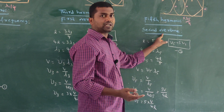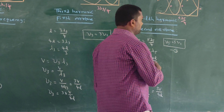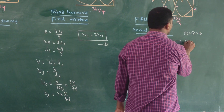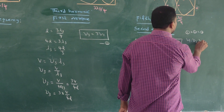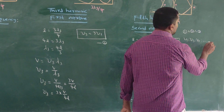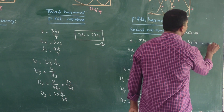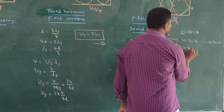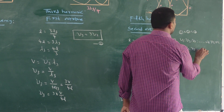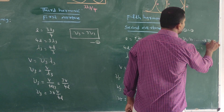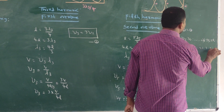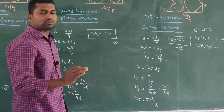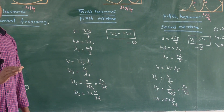We can calculate the ratio of the frequencies of the closed pipe. From equations 1, 2, and 3, we write ν₁ : ν₃ : ν₅ = ν₁ : 3ν₁ : 5ν₁. Therefore, the ratio of the frequencies in the closed pipe is equal to 1 : 3 : 5 : ...